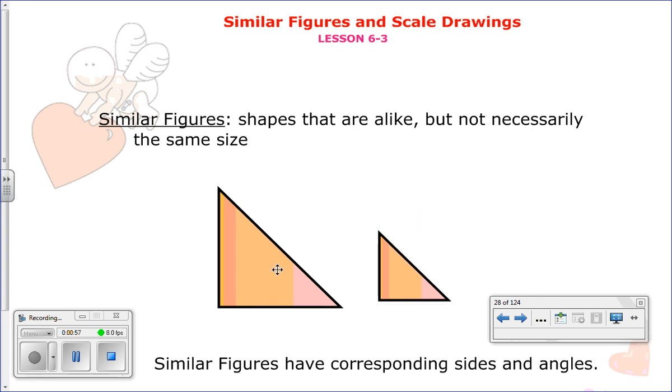But something to know about them is they have corresponding sides and angles. So for example, this side that I'm highlighting in green corresponds with that side. This side corresponds with that side. And finally, the hypotenuse of the triangle, those correspond as well.